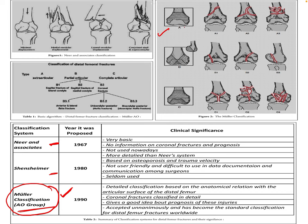The AO Müller classification divides the distal femur fracture into A, B, and C types. Type A fractures are complete extra-articular — the fracture line does not extend into the articular surface. In A1 it is a simple extra-articular fracture, in A2 there is a wedge creation of fracture, and in A3 it is a comminuted extra-articular distal femur fracture.